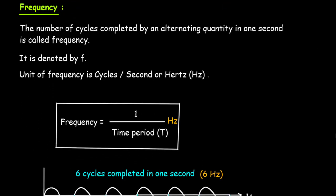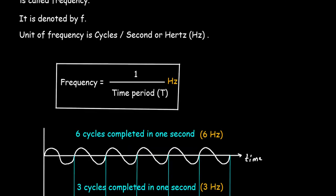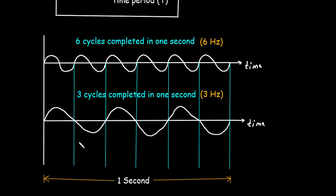Then next is frequency. The number of cycles completed by an alternating quantity in 1 second is called frequency. Here we can see two waveforms, and from here to here this is 1 second. For the first waveform we can count 1, 2, 3, 4, 5, and 6 — so 6 cycles are completed in 1 second, meaning the frequency is 6 Hz.